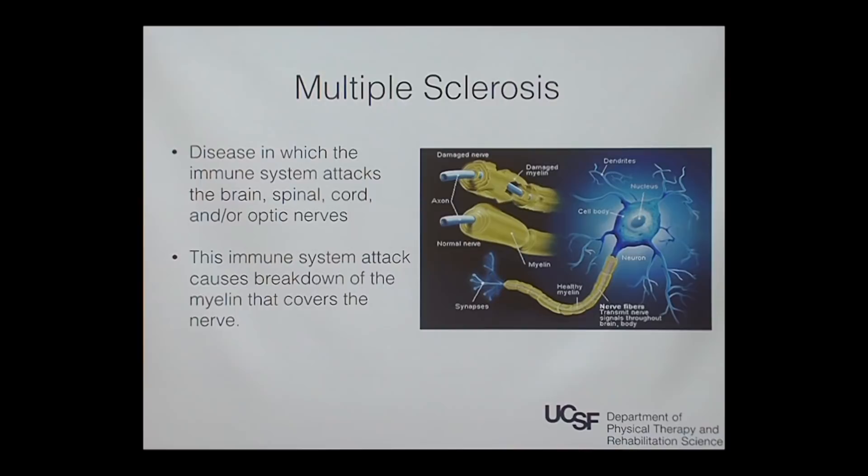This affects the signal from the brain and the spinal cord to various outputs in the body — the muscles, the sensory organs, the eyes, and the vestibular system. It can cause the signal to be disrupted, to be impaired, to maybe go halfway through, or to not have a signal at all.